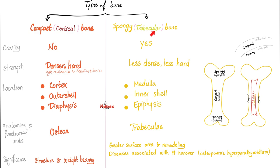Compact bone — also called cortical bone because it's on the outside — has no cavities, is denser, harder, and has higher resistance to bending and torsion. Spongy bone — also called trabecular or cancellous — has cavities, is less dense, and less hard. Compact bone is found in the cortex, outer shell, and diaphysis; its functional unit is the osteon. Spongy bone is trabecular, filled with holes. Functionally, compact bone provides structure and weight-bearing, while spongy bone provides greater surface area, helps remodel bone, and forms an envelope around the bone marrow.